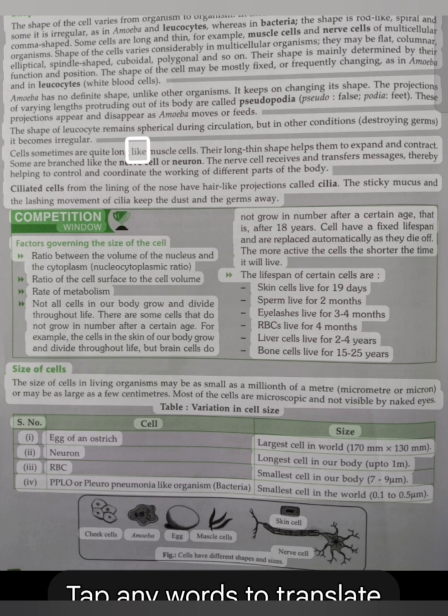Cells sometimes are quite long like muscle cells. Their long, thin shape helps them to expand and contract. Some are branched like the nerve cell or neuron. The nerve cell receives and transfers messages, thereby helping to control and coordinate the working of different parts of the body. Ciliated cells from the lining of the nose have hair-like projections called cilia. The sticky mucus and the lashing movement of cilia keep the dust and the germs away.